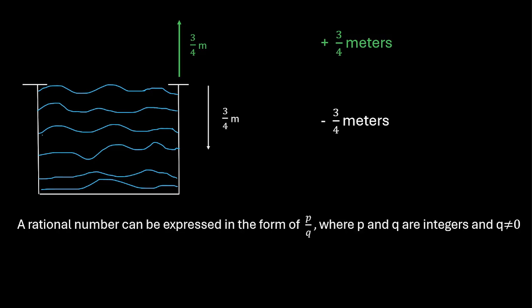Because a rational number can be expressed in the form of p upon q where p and q are integers and q is not equal to 0. So, we can conclude that a rational number can be positive and negative as well.